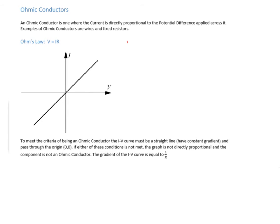On a graph of I against V, the gradient equals the change in current divided by the change in potential difference. Rearranging Ohm's law, this gradient equals one over the resistance. Since the graph is a straight line, the gradient is constant, which means the resistance is constant - a key property of ohmic conductors. Things like fixed resistors and connecting wires are ohmic conductor components.